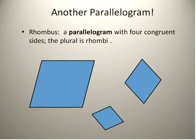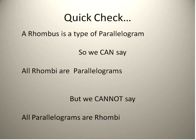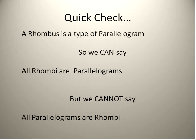Let's do a quick check of our understanding. A rhombus is a type of parallelogram, so we can say all rhombi are parallelograms. But we cannot say all parallelograms are rhombi. Every single rhombus is a parallelogram, but there are many different types of parallelograms that are not rhombi.